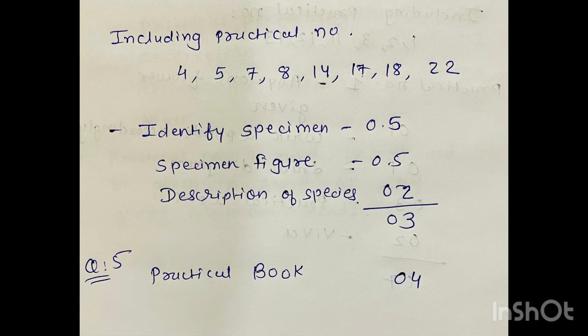For your correct identification, 0.5 marks. For your diagram, 0.5 marks. And for your description, it carries two marks. So for each species it will be three marks. And four marks for your submission of practical book. Thank you for watching my video.